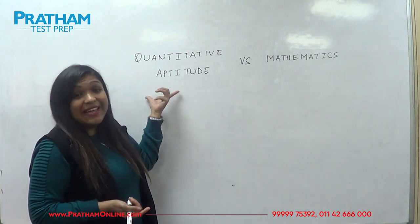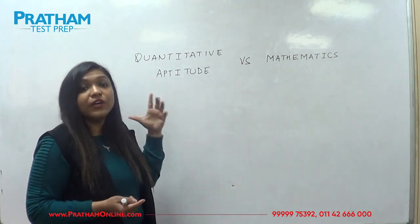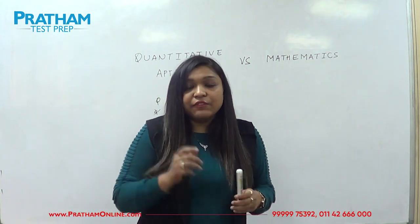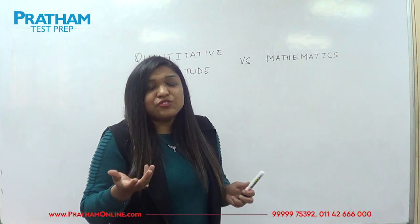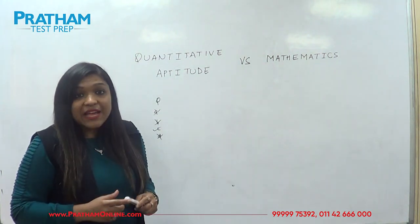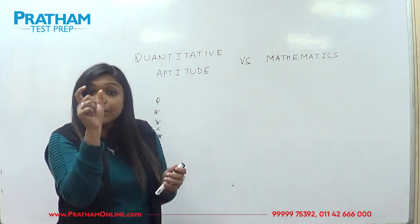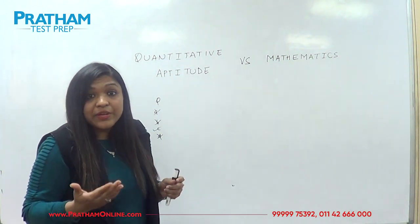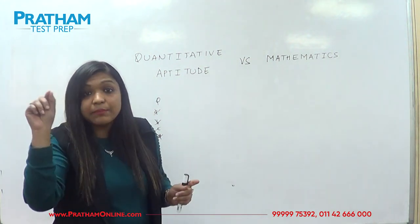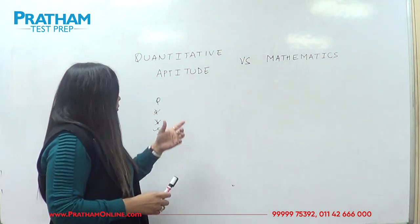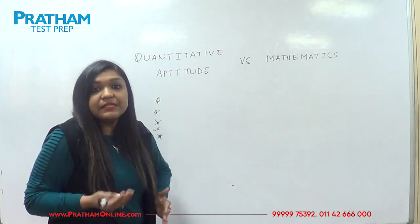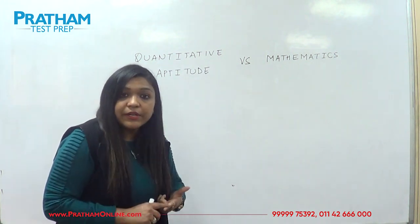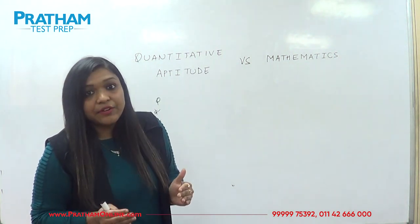The approach in quantitative aptitude is elimination, hit and trial, or a shortcut way of solving a question. In an entrance exam, we have very little time — maximum 1 to 1.5 minutes per question. In that time, we need to read the question, read the options, solve the question, answer it, and tick mark the correct answer in the OMR sheet. The easiest way to do that is by elimination, shortcut tricks, hit and trial, or an educated guess.